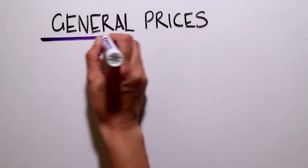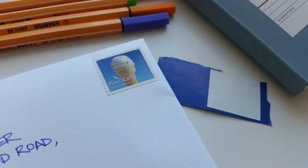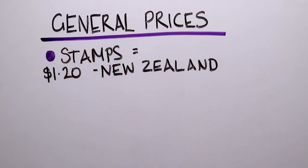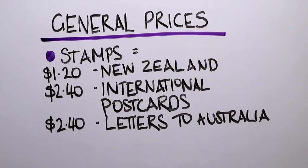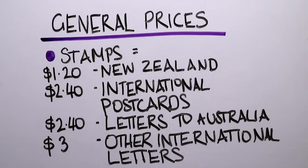Here are some other general costs. A stamp to send a letter within New Zealand is $1.20. Sending postcards internationally is $2.40. And sending a letter internationally is $2.40 for Australia and $3 for anywhere else.